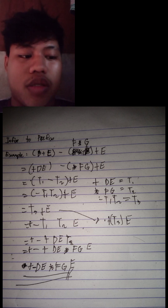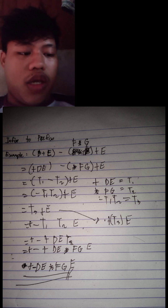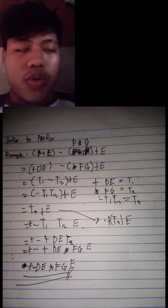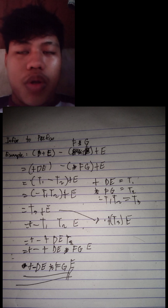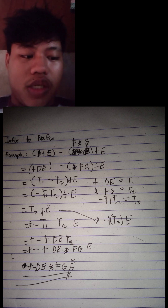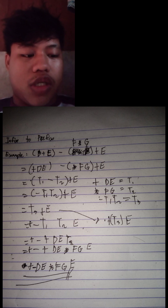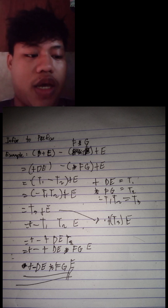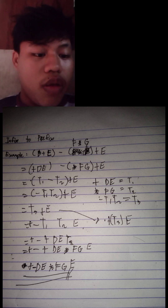The third line: T1 is representing D and E, and T2 is representing F and G. And minus T1 minus T2 is inside the open and close parenthesis, then plus E. You will also transform them into prefix — the symbol in front is already a prefix, followed by the operands. Like the fourth line: open parenthesis minus T1 T2 close parenthesis plus E.